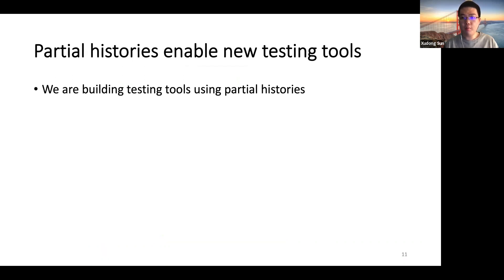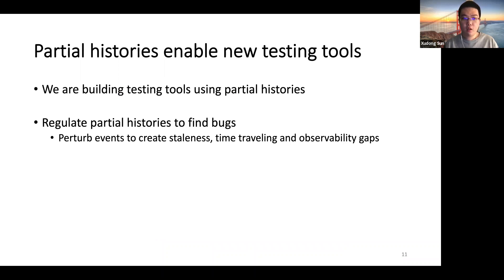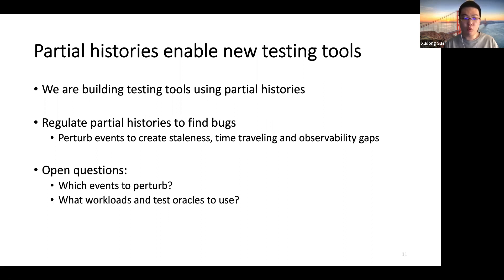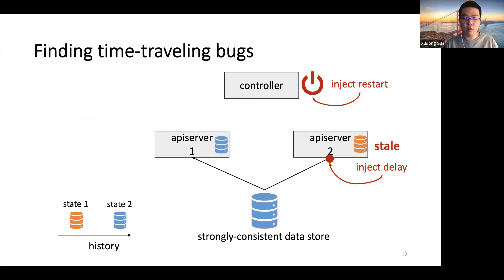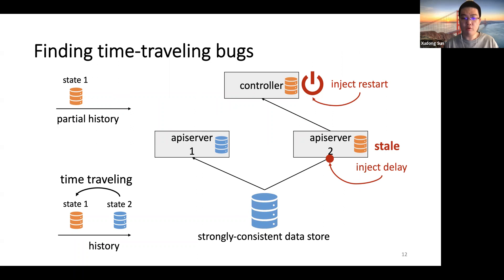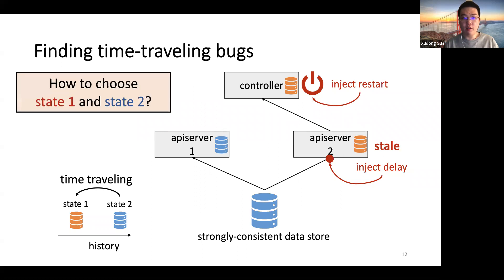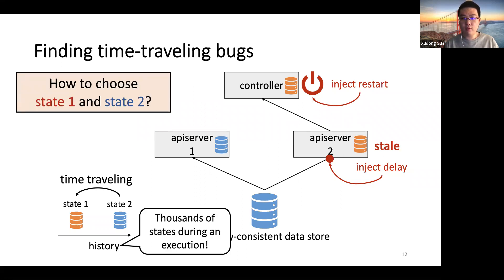Finally, partial histories enable new testing tools. We are currently building testing tools using partial history. The idea is to manipulate partial histories to find bugs. By just interposing at the service API boundaries, we can perturb events to create staleness, time traveling, and observability gaps. There are also many challenges in building such a tool — for example, given the huge execution space, which events should be perturbed, and what workloads and test oracles to use. To find time traveling bugs in this way, we inject a delay in API server 2 to make it stale, and inject a restart in the controller to make it switch between the two API servers and time travel from state 2 to state 1. One of the most challenging questions is how to choose state 1 and state 2. Given there could be thousands of states during execution, a potential solution is to analyze the controller's behavior to figure out which states can lead to conflicting actions.